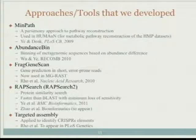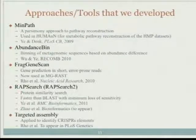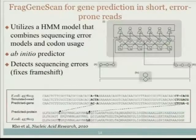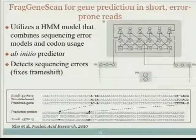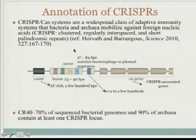We are interested in coming up with new algorithms and new software so that hopefully we can make more sense of those metagenomic sequences. FracScan is the one we developed for gene prediction from short reads, error-prone reads. And this is a very new work we have done - we try to identify CRISPR elements. Probably many of you don't know what CRISPR means - you can just consider it a bacterial immunity system.